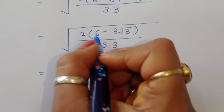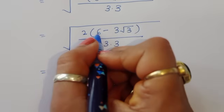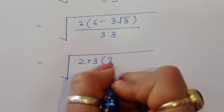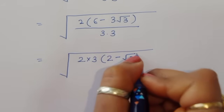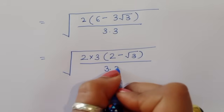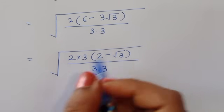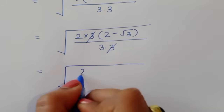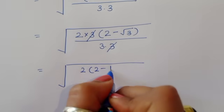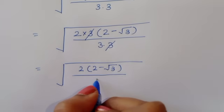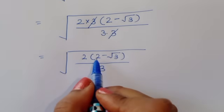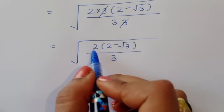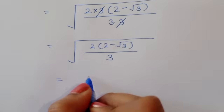In the numerator, we can take 3 as a common factor from (6 minus 3 square root of 3): 6 divided by 3 is 2, so we get 2 times 3 times (2 minus square root of 3) divided by 9. Cancelling the 3, we get 2 times (2 minus square root of 3) divided by 3.